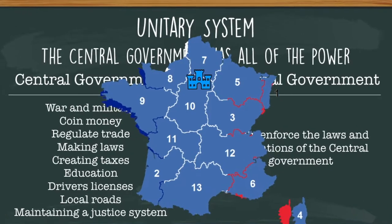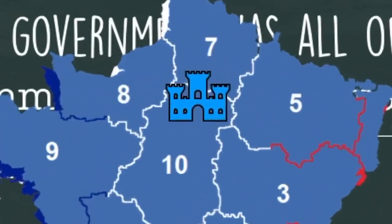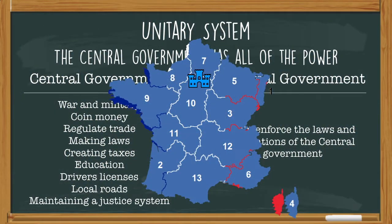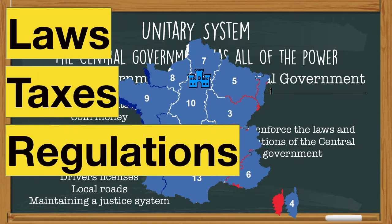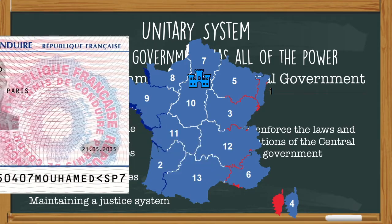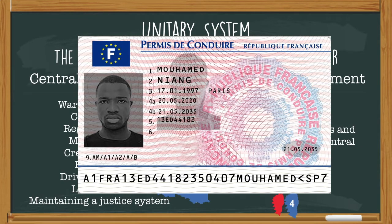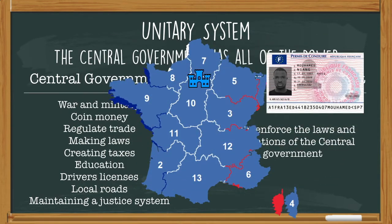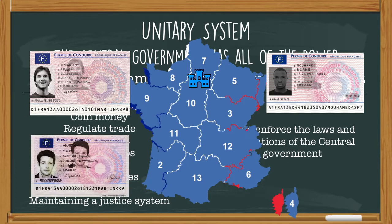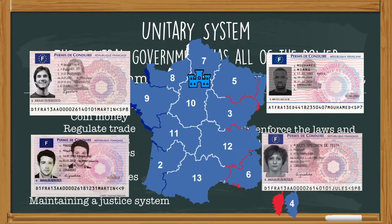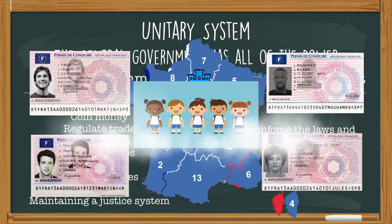The only one that has power is the national government in Paris, which means everything should be the same in these 13 regions of France. The laws, the taxes, the regulations should all be coming from Paris. The regional governments have to follow them. This is why a driver's license in France will look the same in any of the 13 regions — the unitary government designs them, determines the requirements, and the regions have to follow these regulations.